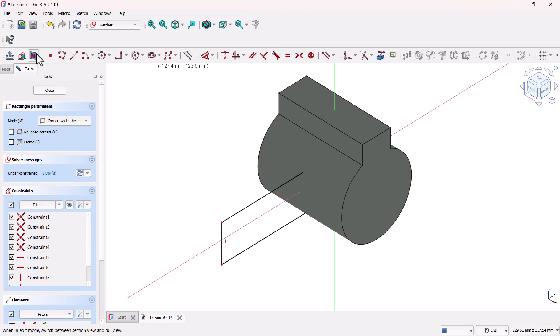FreeCAD has a fix for this. Let's use this View Section tool, it's like a slicing knife for 3D objects. Click that, and now you can see your sketch through the sliced cylinder.